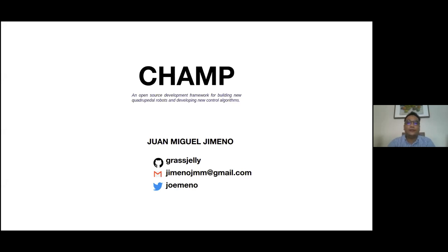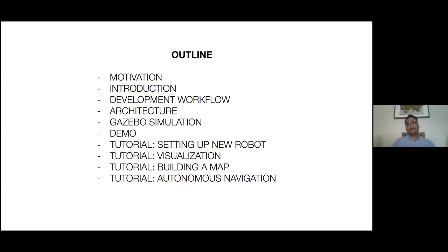Today I'll be talking about CHAMP, which is an open source development framework for building new quadrupedal robots and developing new algorithms. Here's a brief outline: it's split into two parts. I'll start with slides to discuss the motivation behind the project, a short introduction on the development workflow when building a quadrupedal robot, and the architecture of the framework. I'll also show some Gazebo simulation. The last part will be a hands-on tutorial, so feel free to raise questions.